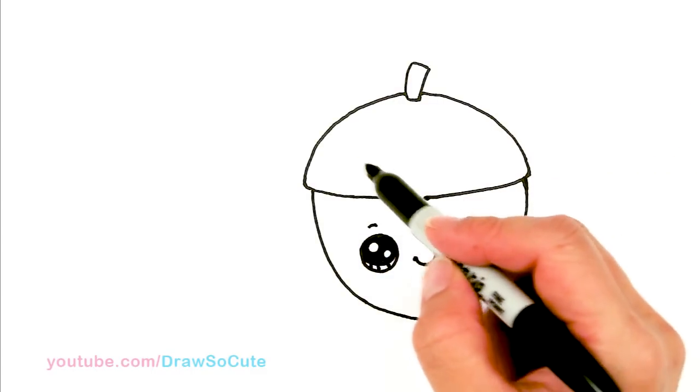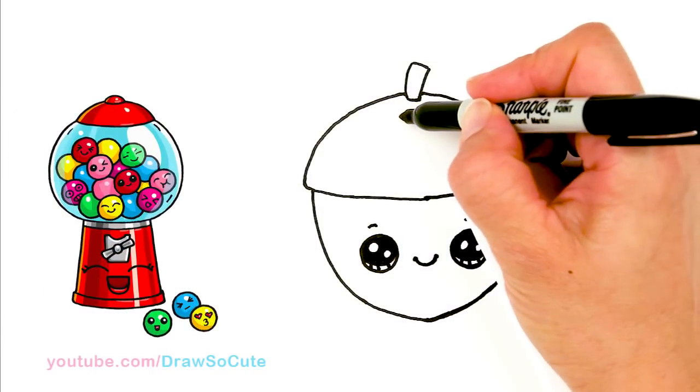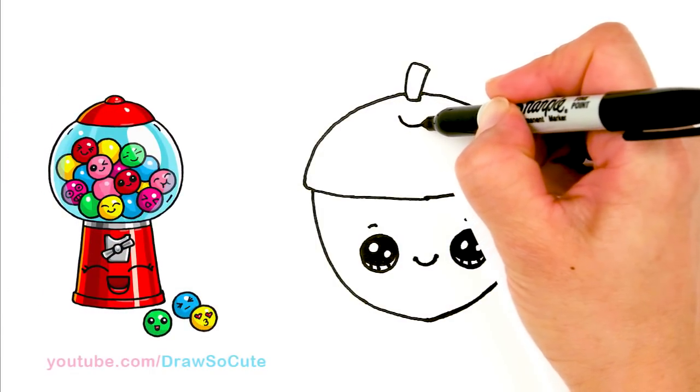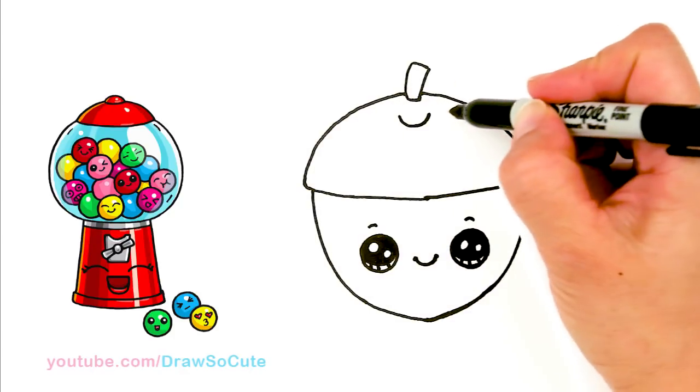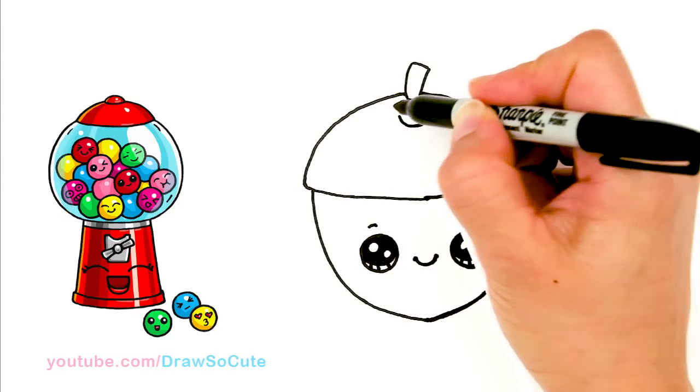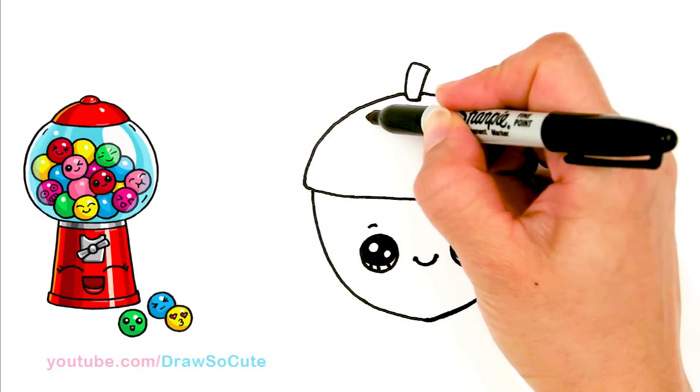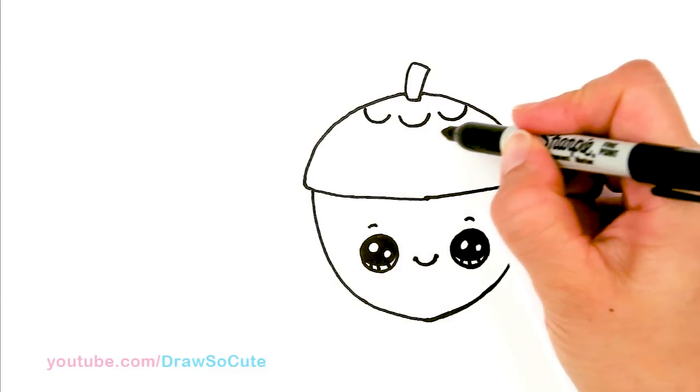And then now to give some details to the top, kind of this hat of this acorn right here. I'm going to start at the top and I'm just going to draw a curve in the center. So this is to give the top some texture. And I'm going to just give it a little bit space. And I'm going to draw another curve. So I'm going to do the same thing over here. So don't worry about this too much.